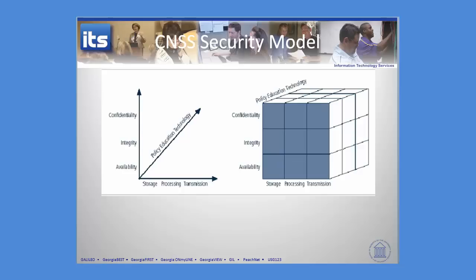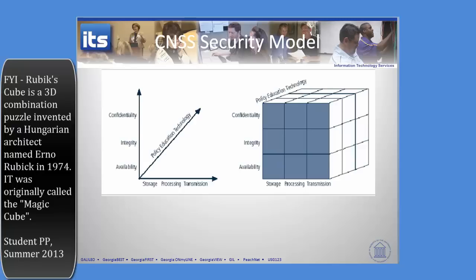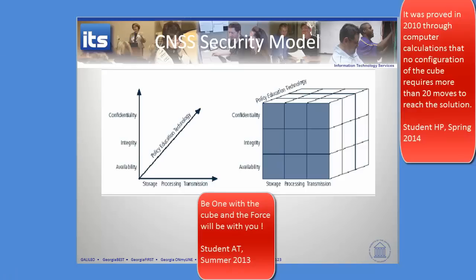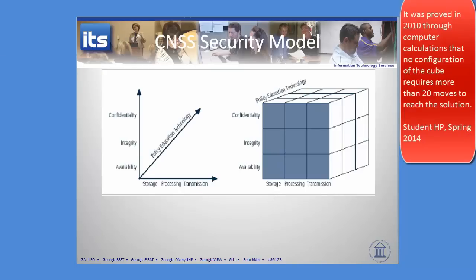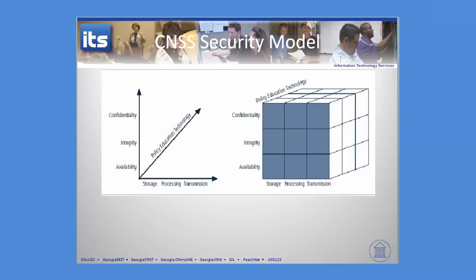While the data is in one of those three states, it can be protected using policy, education, and technology. For those of you who remember a Rubik's Cube, we've got a cube with policy, education, and technology on one axis; confidentiality, integrity, and availability on another; and storage, processing, transmission on the third. Whenever you answer a question, consider all nine dimensions of this model. This is an important slide we're going to come back to over and over.